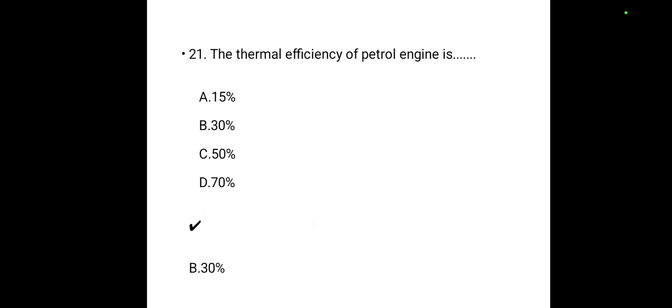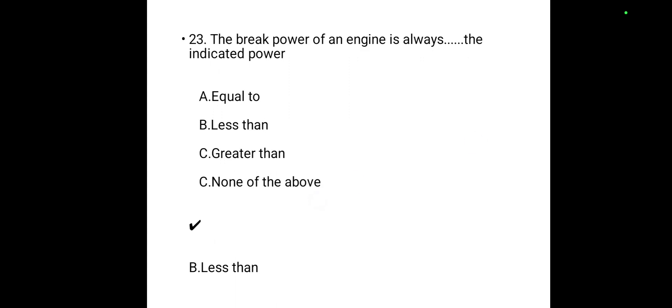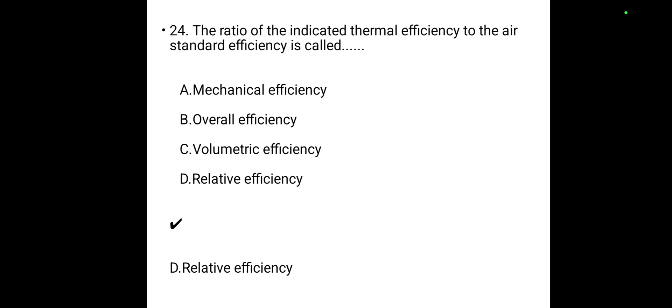The power developed by the engine cylinder of an IC engine is known as indicated power. The thermal efficiency of a petrol engine is 30%. The volumetric efficiency of a well-designed engine may be 75–90% — answer is Option D. The brake power of an engine is always less than the indicated power — Option B. The ratio of indicated thermal efficiency to air standard efficiency is called relative efficiency — Option D.